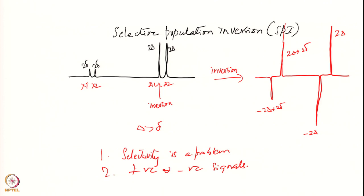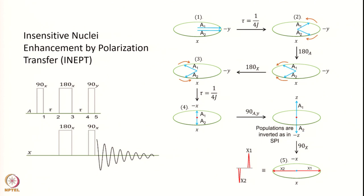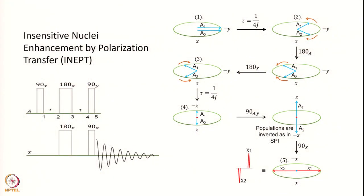In order to get over this problem, a new technique came up called INEPT — Insensitive Nuclei Enhancement by Polarization Transfer. The experiment is well described here; I will go through it step by step. We will see that we use the principle of SPI here at a certain point, and I will explain where we use it. The pulse sequence is called Insensitive Nuclei Enhancement by Polarization Transfer, or in short, INEPT.